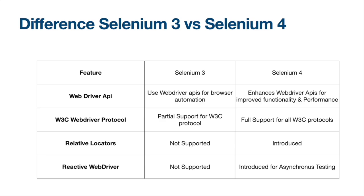The third point is relative locators, which are not available in Selenium 3. Selenium 4 has introduced relative locators so elements can be found more easily. Previously, there were many cases where elements were not getting located easily at runtime, so this new facility called relative locators addresses that.